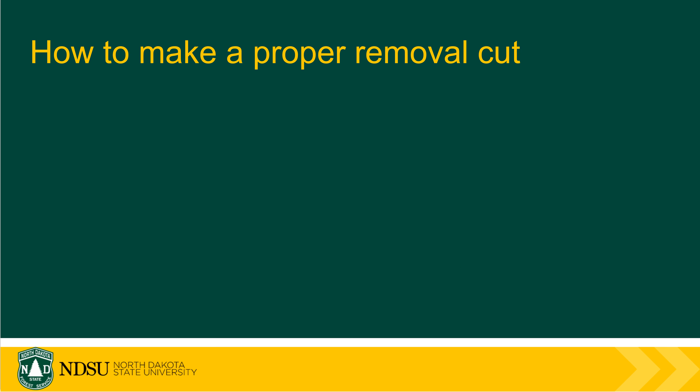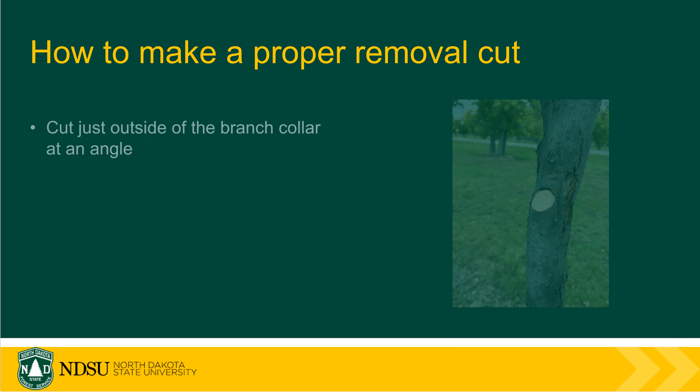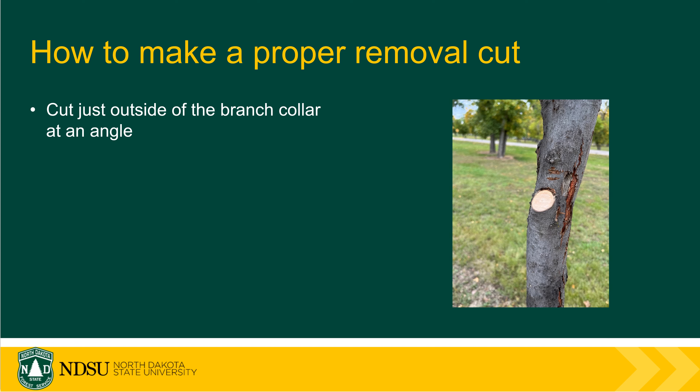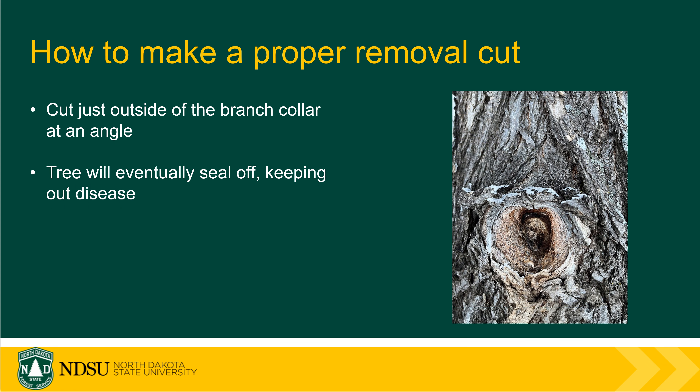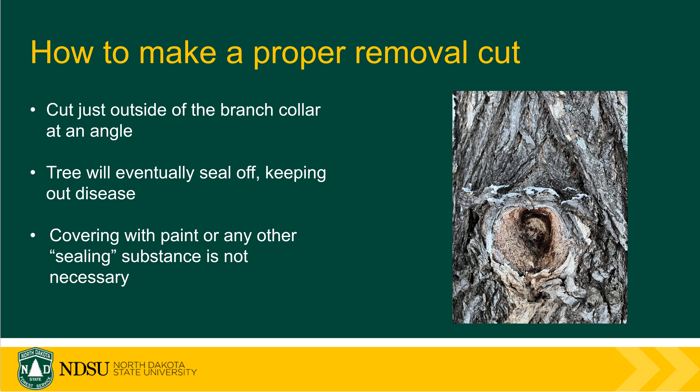When making a removal cut, you want to cut just outside the branch collar, at an angle. This was the first tree that I cut with a removal cut — you can see I tried to retain as much of the branch collar as possible. Eventually the tree will seal off and keep out any infection or decay. In this picture, the American elm has almost completely overgrown the branch that was cut off. In the old days they said that putting paint or pruning sealer was necessary, but that's not true — pruning doesn't really need any sealing substance if you make the right cuts.